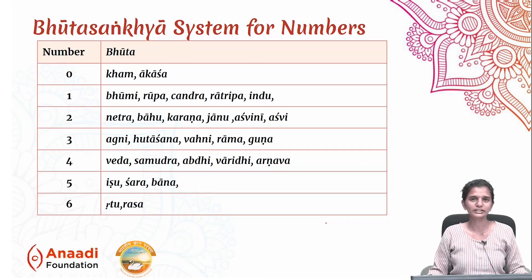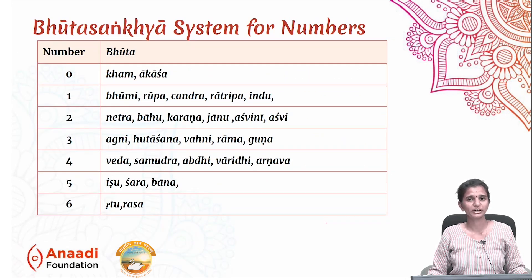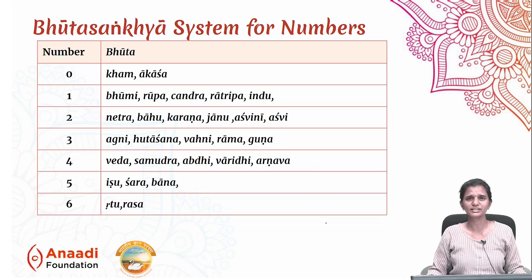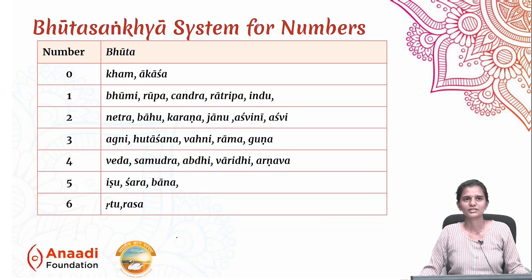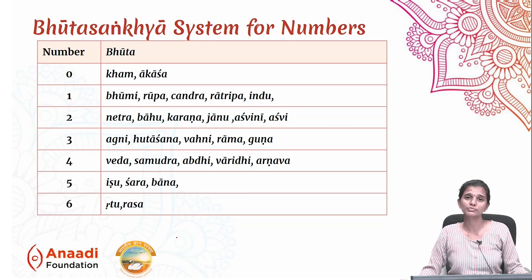Let us look at the traditionally used Bhoutas by Indian mathematicians to represent numbers. First, zero. It is Kham or Akasha — both mean space. Space is infinite, but it also represents Shunya, that is zero. So Kham, Akasha, and all synonyms for space represent zero.